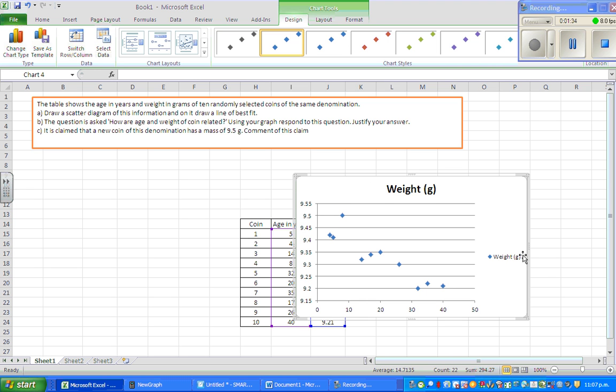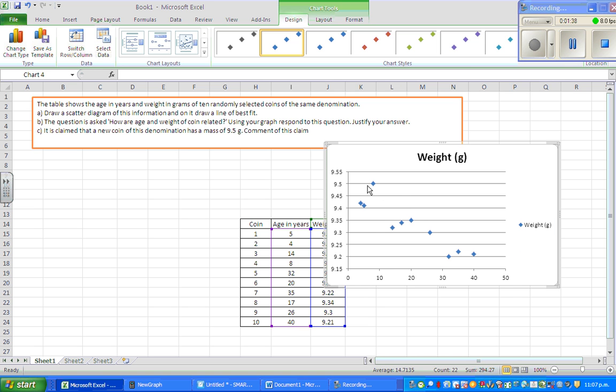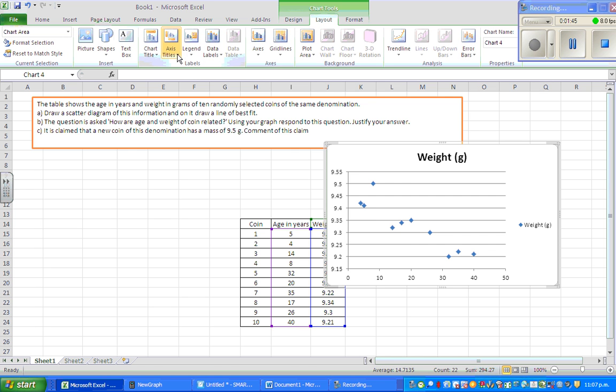So this is a scattergraph and then you can label it. So if you go to layout and then you go to axis, axis title, you can do those things yourself. So that's not my focus. So let me delete this.